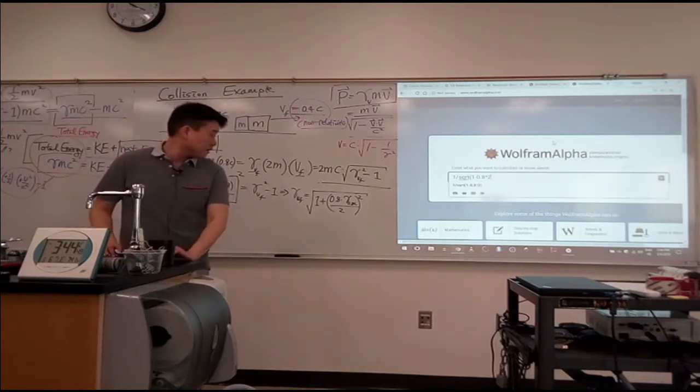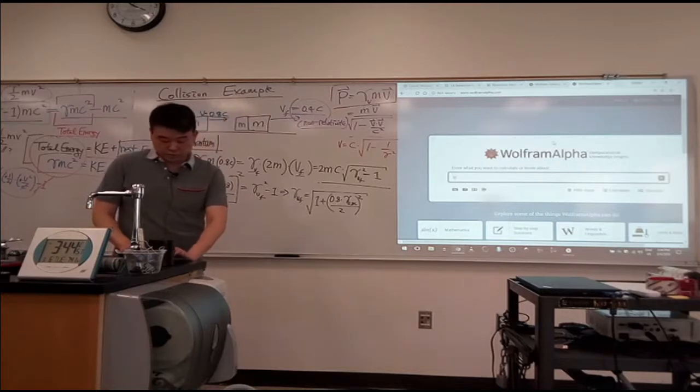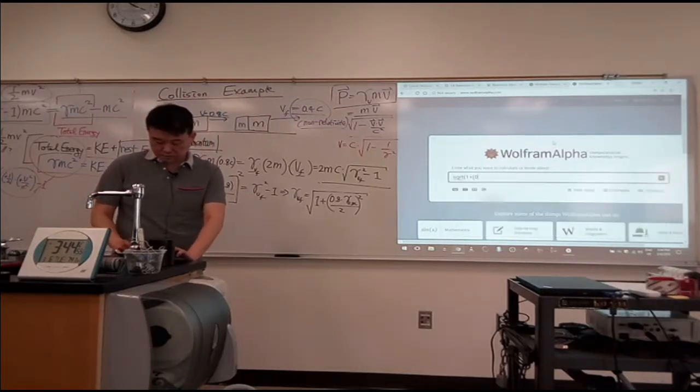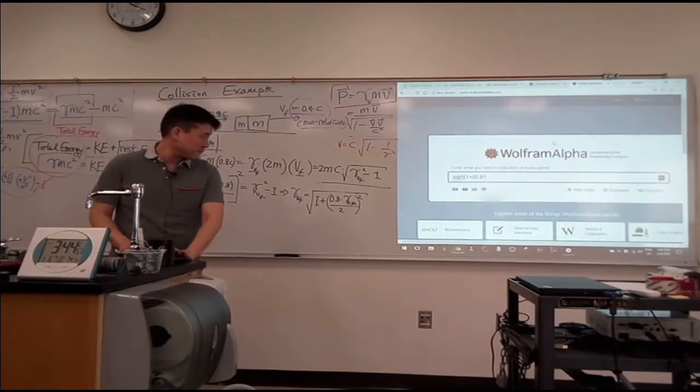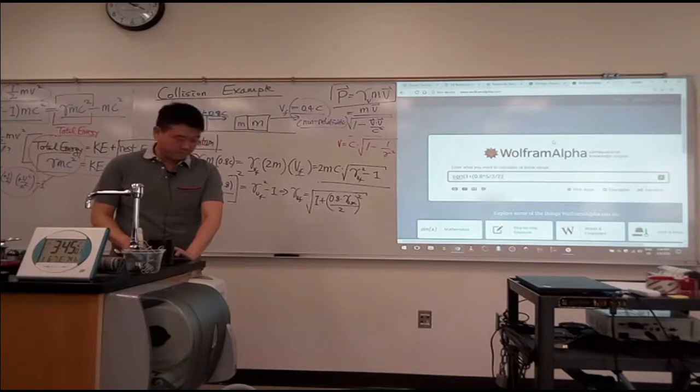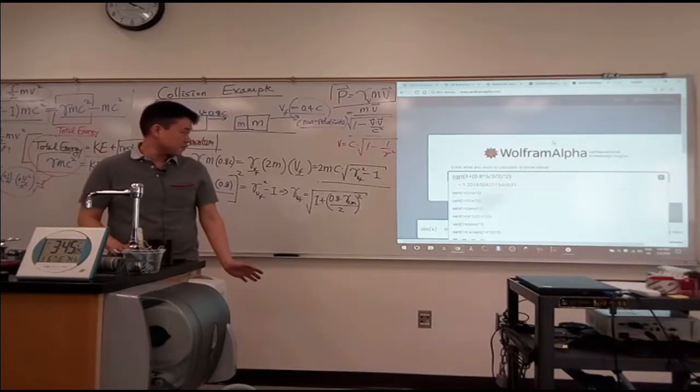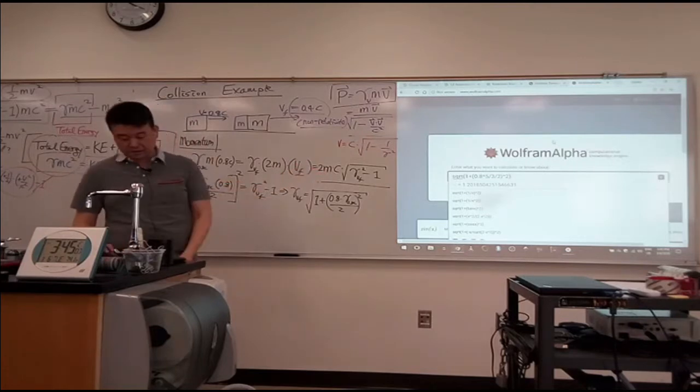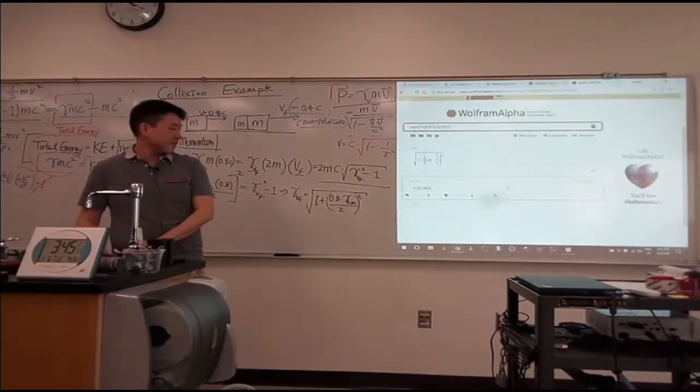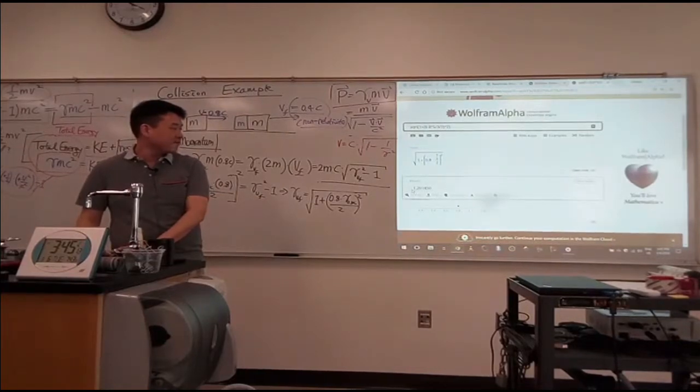So let me write this out. Square root of 1 plus 0.8 times 5 thirds divided by 2. The whole thing squared and then square root. So 1 point... Okay, I actually need that value. Thank you. Alright. So that's gamma V final.